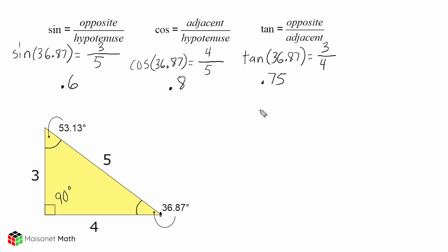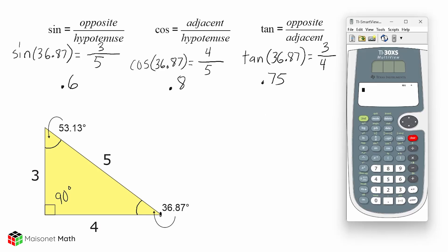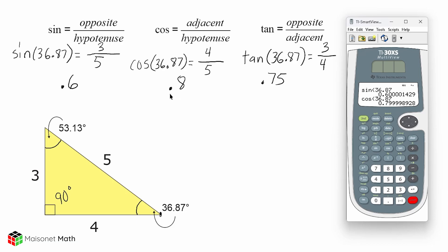Let's go ahead and verify these values by using a calculator. Starting with the sine of 36.87 — if we round this value to the nearest tenth, that would be 0.6, which confirms our results. The cosine of 36.87 to the nearest tenth gives us 0.8. And the tangent of 36.87 rounded to the nearest tenth gives us 0.75.